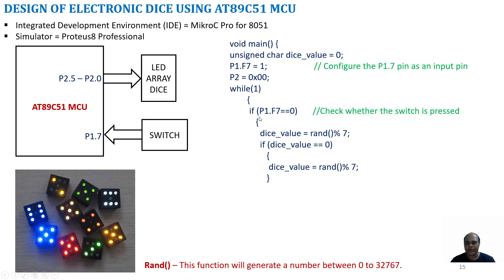Then in a while loop I try to check whether the switch is pressed with the help of an if condition. So if Port 1.7 equals 0, which means if the switch is pressed, Port 1.7 will become 0. In that case we generate a random number using the rand() function. The rand() function will generate a number between 0 to 32767, and this random number is divided by 7. We use the mod operator to take the remainder value, so the remainder value can be between 0 to 6.